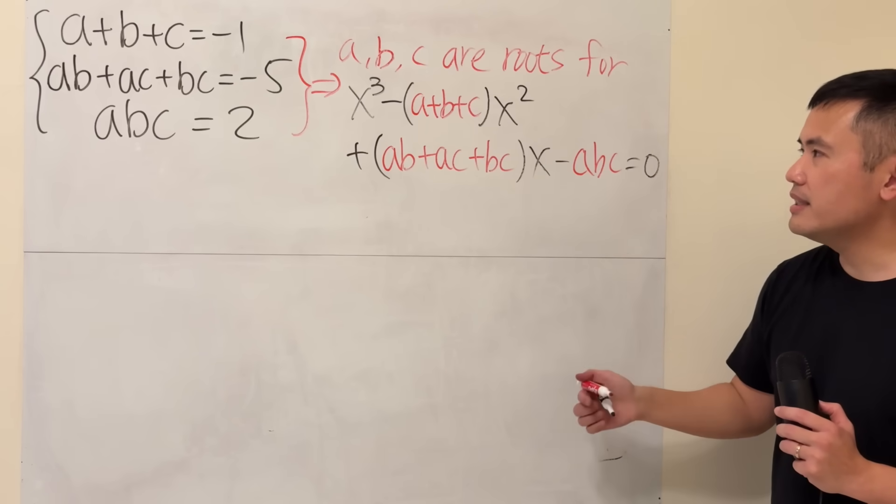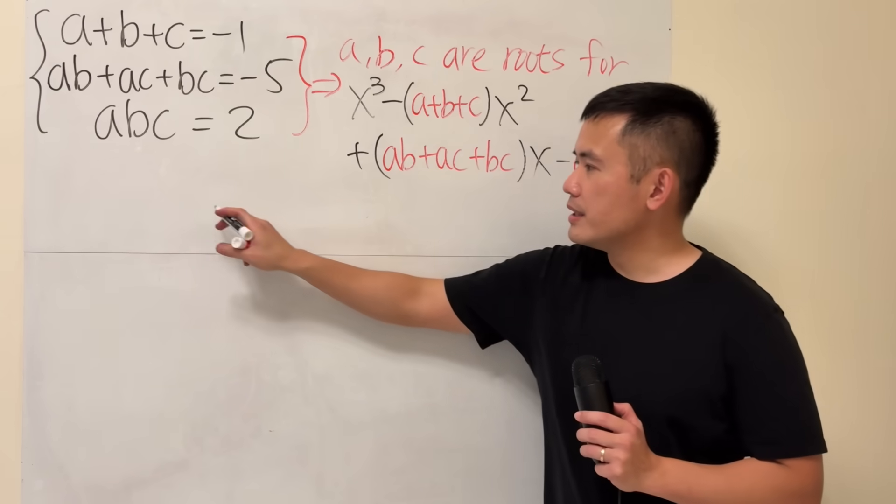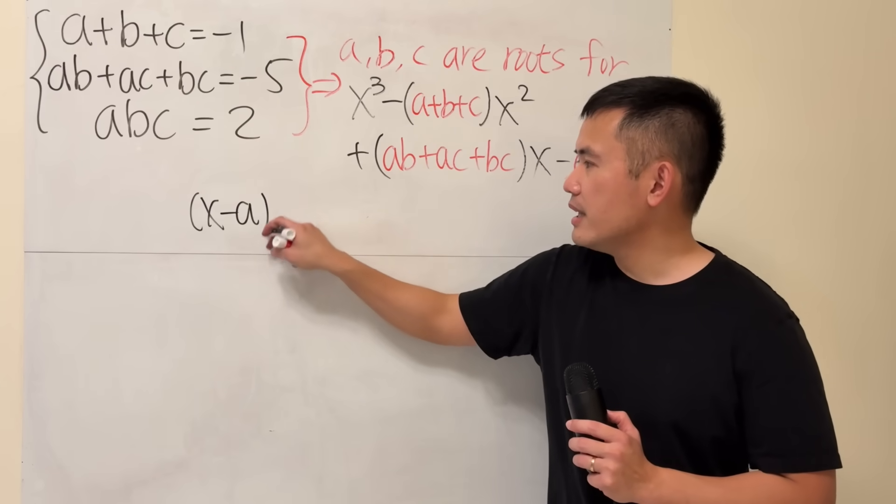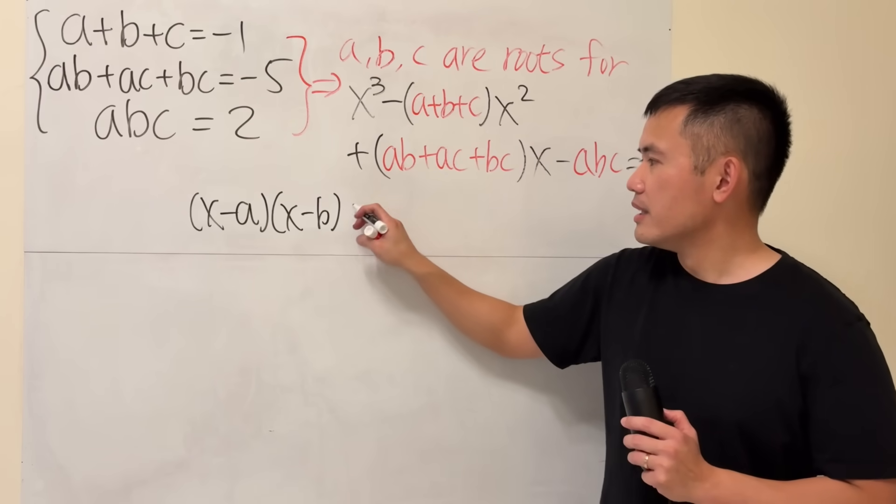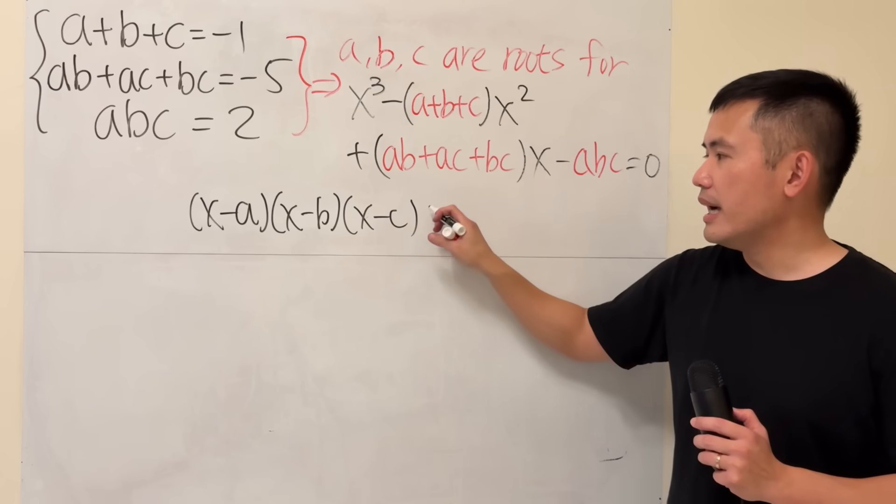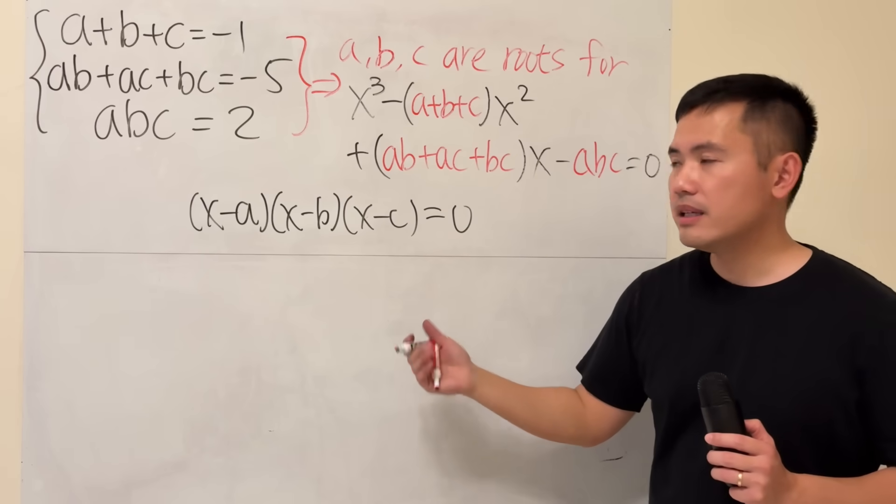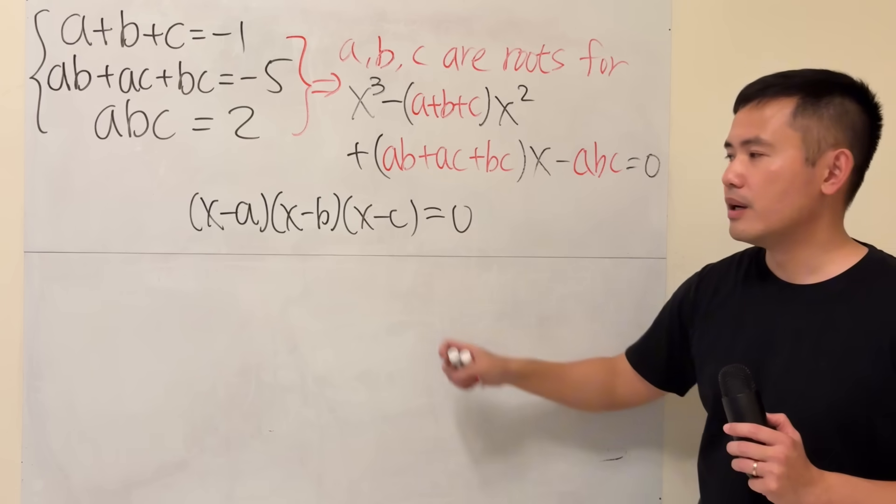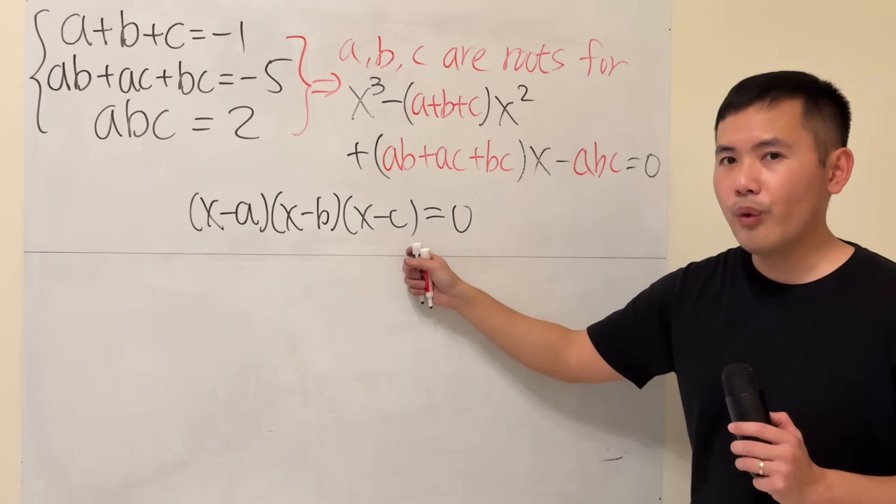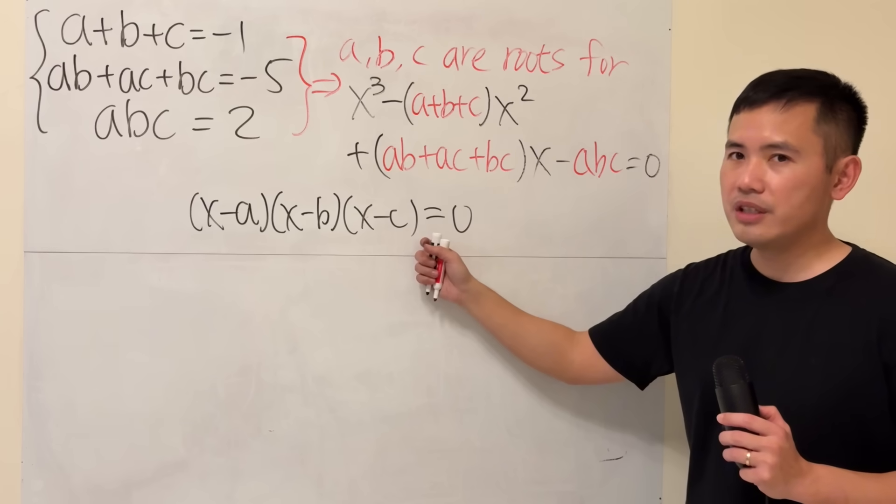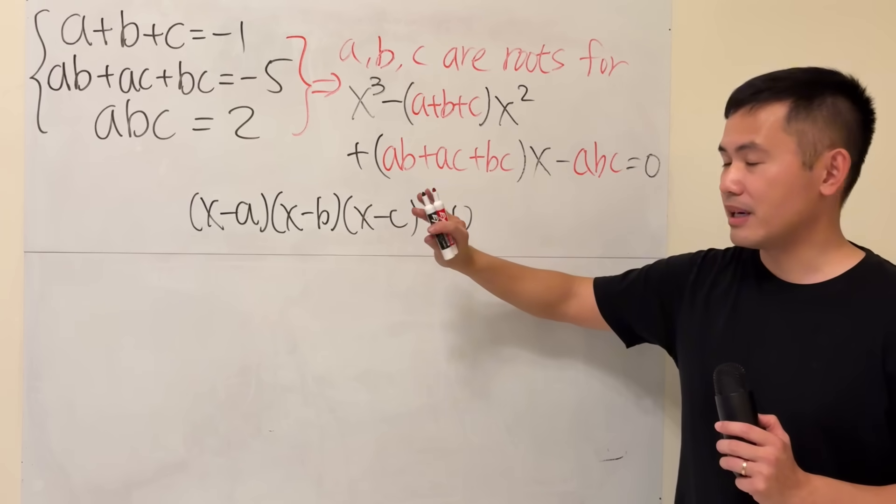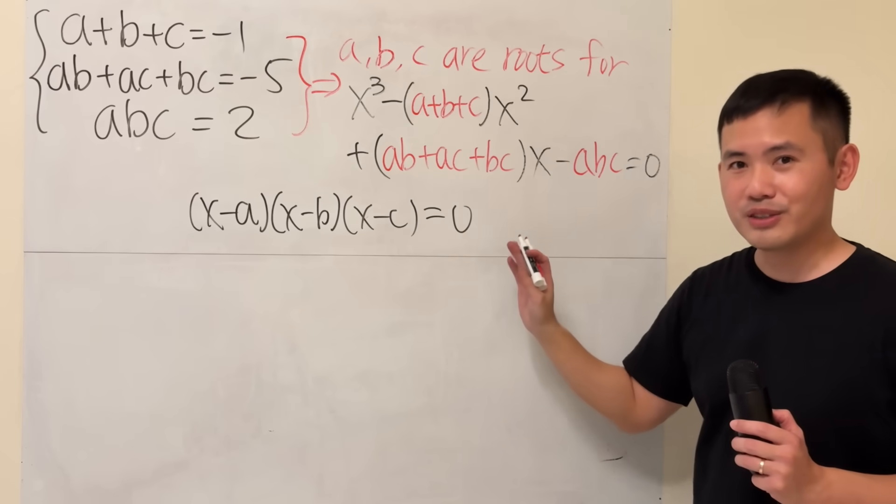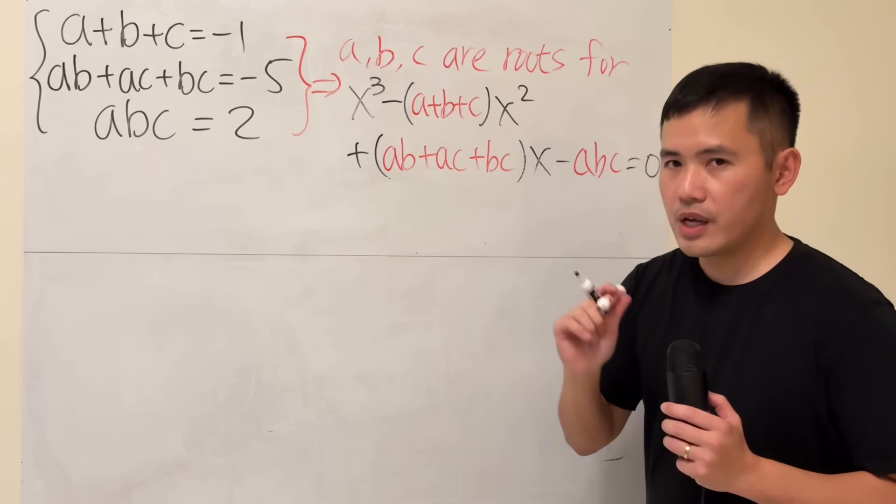Well, to see why this is the case, you can start off by writing this down. X minus A times X minus B times X minus C, and it's equal to zero. Expand it, and then you can match coefficients. I'm going to give this to you, or you can check out my other video for a detailed explanation for this. But today, let's just focus on solving the cubic equation. Here we go.